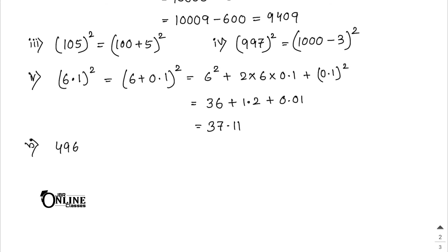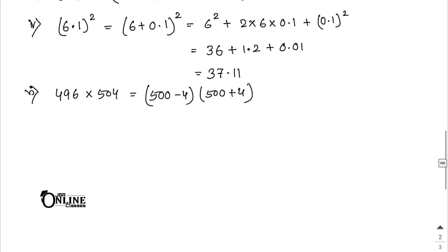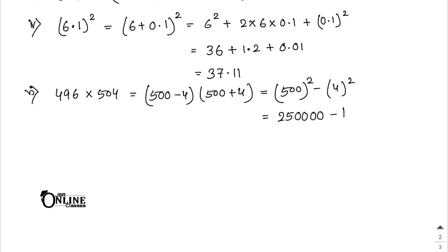496 × 504: write as (500 - 4)(500 + 4). Apply (a + b)(a - b) = a² - b² = 500² - 4² = 250000 - 16 = 249984.